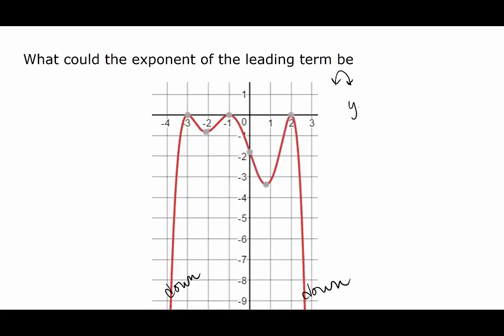So examples could be negative x to the fourth, negative x to the sixth, negative x to the eighth. And we'll find out later how we can tell which one this is.